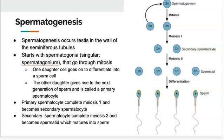Spermatogenesis occurs first of all in the testes, and it actually occurs in the wall of something called seminiferous tubules, which we're going to see in a second. The process is going to start with a germ cell — the primordial cell that leads the way into the creation of sperm or eggs. It's the first cell, and since it needs to go through meiosis and end up as haploid cells, this cell is diploid. Both females and males will have this germ cell.